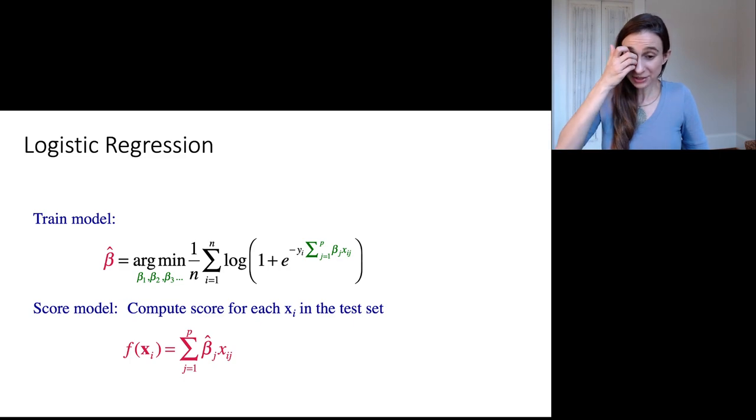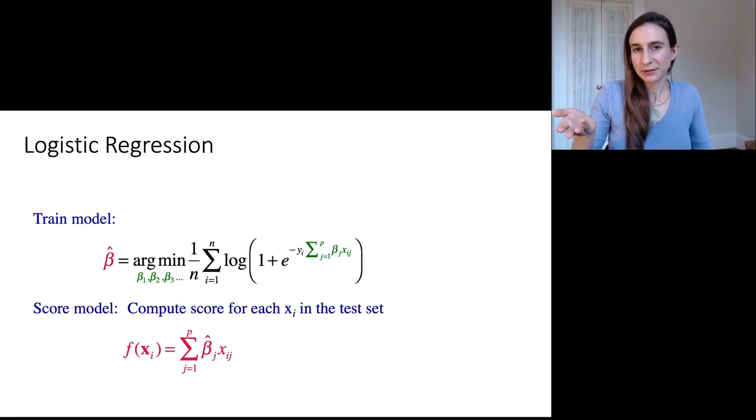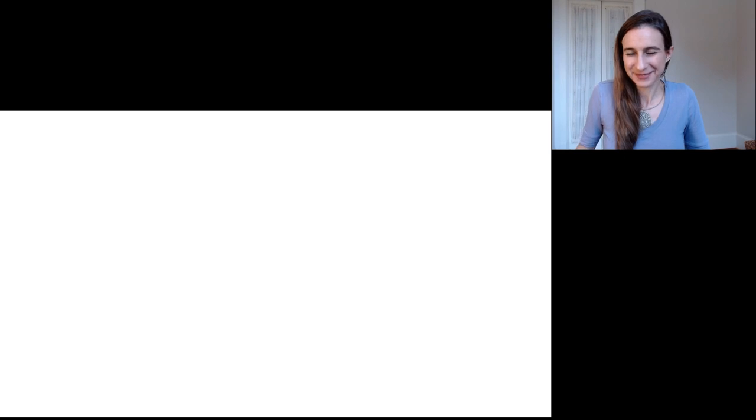Okay, so just to summarize logistic regression, you train the model. It comes from the minimization of our logistic loss, or else the negative log likelihood. And then once you have that beta that fits the data well, then you can use that to give a score for each new test point. So if you have a new test point, you can use that beta that you created to give a score for that test point. And if you like, you can give it the probabilistic interpretation from the last slide. Thank you.